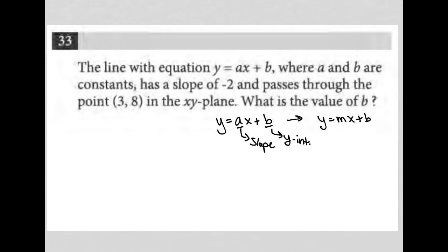So a and b are constants, has a slope of negative 2, so what's that telling me? That a is equal to negative 2, right? And passes through the point 3, 8.